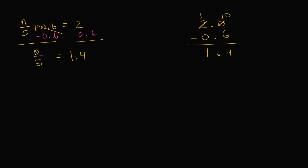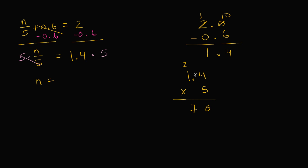Now to solve for n, on the left I have n being divided by 5. If I want just n, I can multiply by 5. So multiplying both sides by 5: 5 times n/5 is just n, but I can't just multiply the left hand side — I have to multiply the right hand side by 5 as well. So n is equal to 1.4 times 5. You might recognize that 1.4 is 1 and 2/5, so this should equal 7. And indeed, 5 times 4 is 20, regroup the 2, 1 times 5 plus 2 is 7 — with one decimal place, that's 7.0, or just 7.